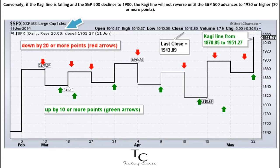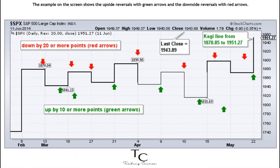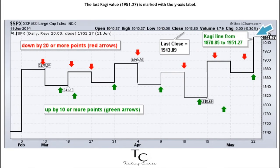The Kagi line will not reverse until the S&P 500 advances to 1920 or higher — 20 or more points. The example on the screen shows the upside reversals with green arrows and the downside reversals with red arrows. The last Kagi value, 1951.27, is marked with the Y-axis label.